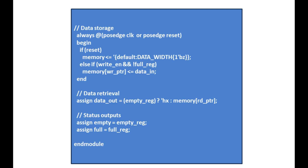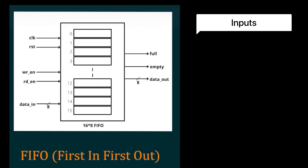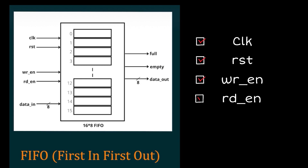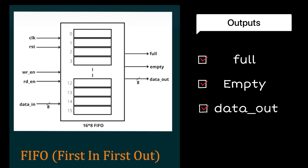Before moving to the first part, let's see this figure of FIFO. Here I have taken a 16 by 8 FIFO. The inputs are clock, reset, write enable, read enable, and data in, which is 8 bits. The outputs are full, empty, and data out, which is 8 bits. The write enable signal means whenever you have to perform the write operation, this write enable signal should be high. For the read operation, the read enable signal should be high.